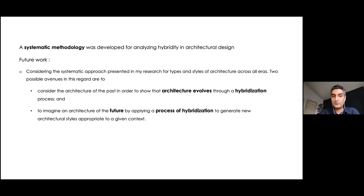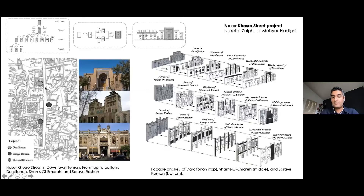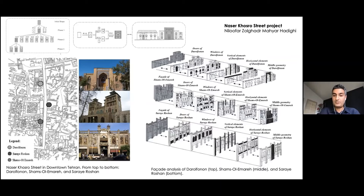I was able to develop a systematic methodology to analyze hybridity in architectural design. My idea for future work was to use this systematic methodology to research other types and styles of architecture across all areas — with two avenues: first, considering the architecture of the past to show how architecture evolves through a hybridization process; and second, imagining an architecture of the future by applying a process of hybridization to generate new architectural styles appropriate to a given context.